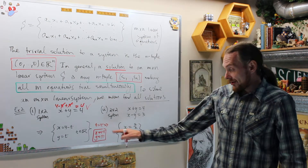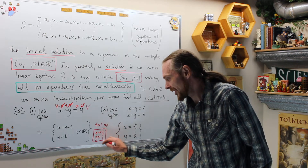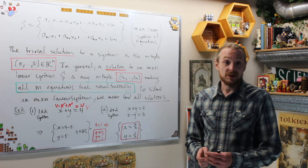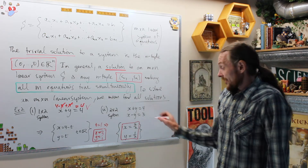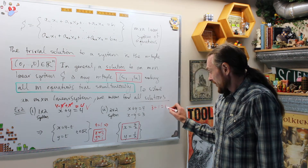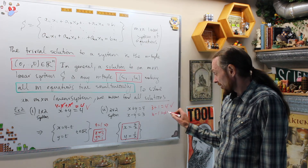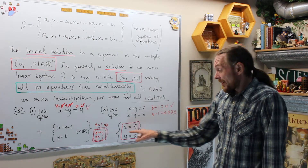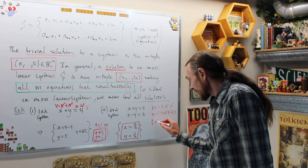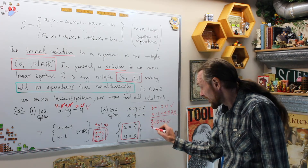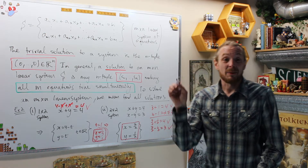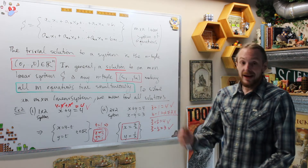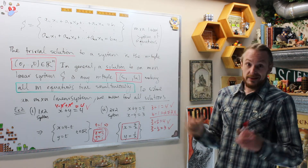Now try the ordered pair (3, 1) in this two by two system. In the first equation, three plus one is four — it solves it. But in the second equation, three minus one is two, which is not equal to three. So it didn't solve both equations simultaneously — it's not a solution to the system. The unique solution seven-halves, one-half satisfies both equations simultaneously.